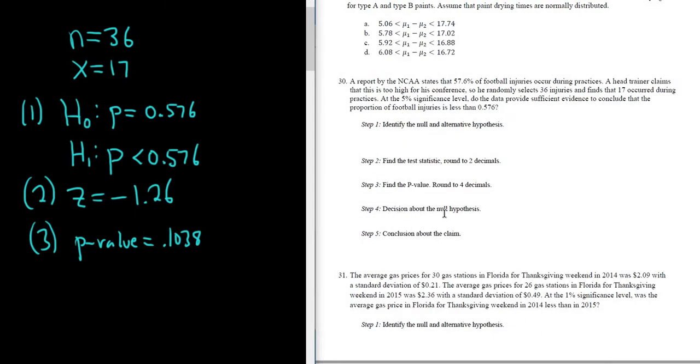Step 4, decision about the null hypothesis. So we have to look for our alpha. That's this here, this 5%. So alpha is 0.05. So basically the rule is this. If the P value is less than or equal to alpha, we reject H0. Otherwise, we fail to reject.